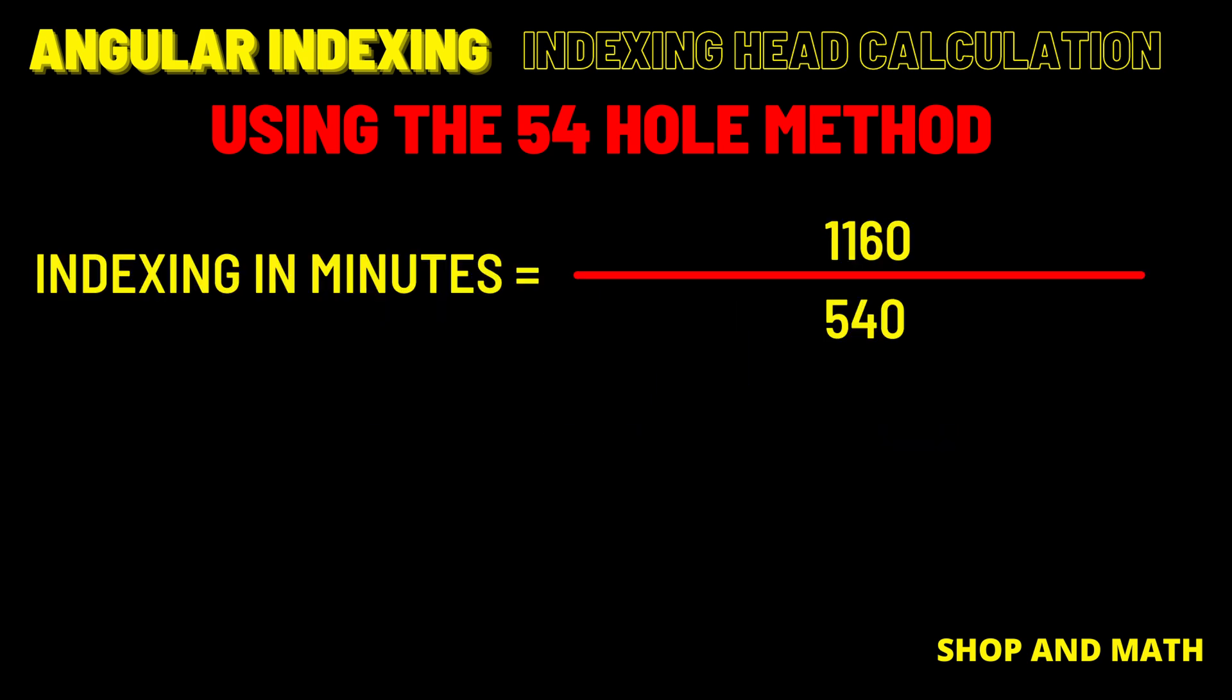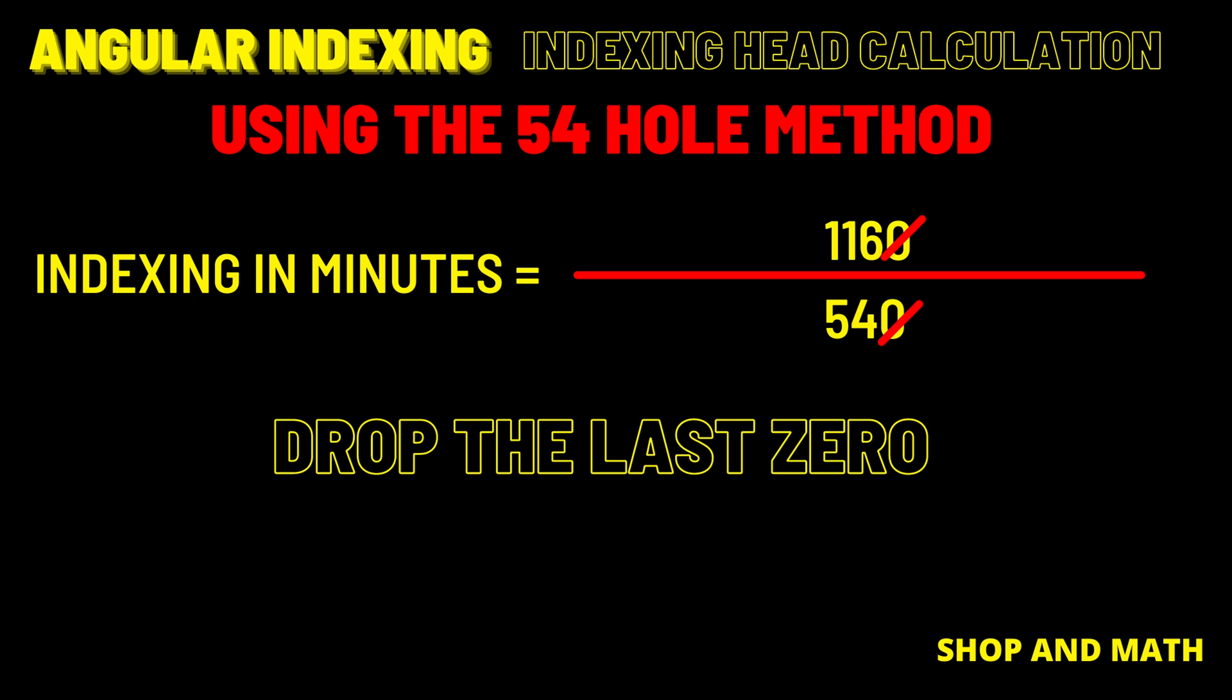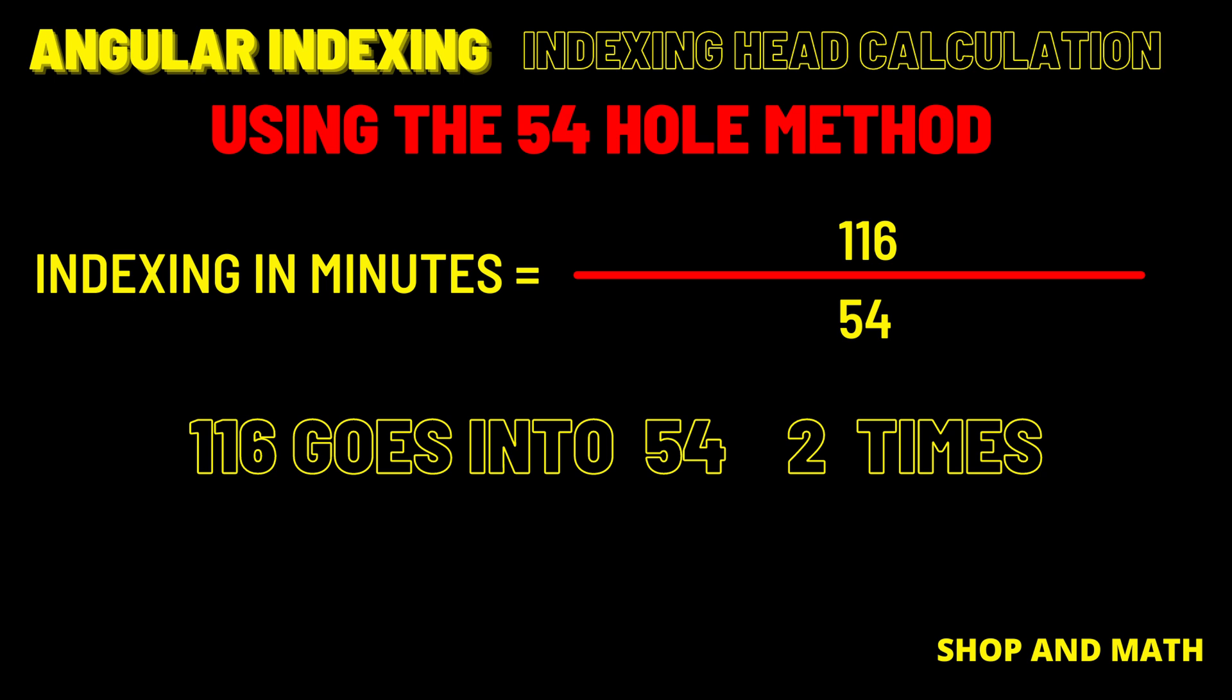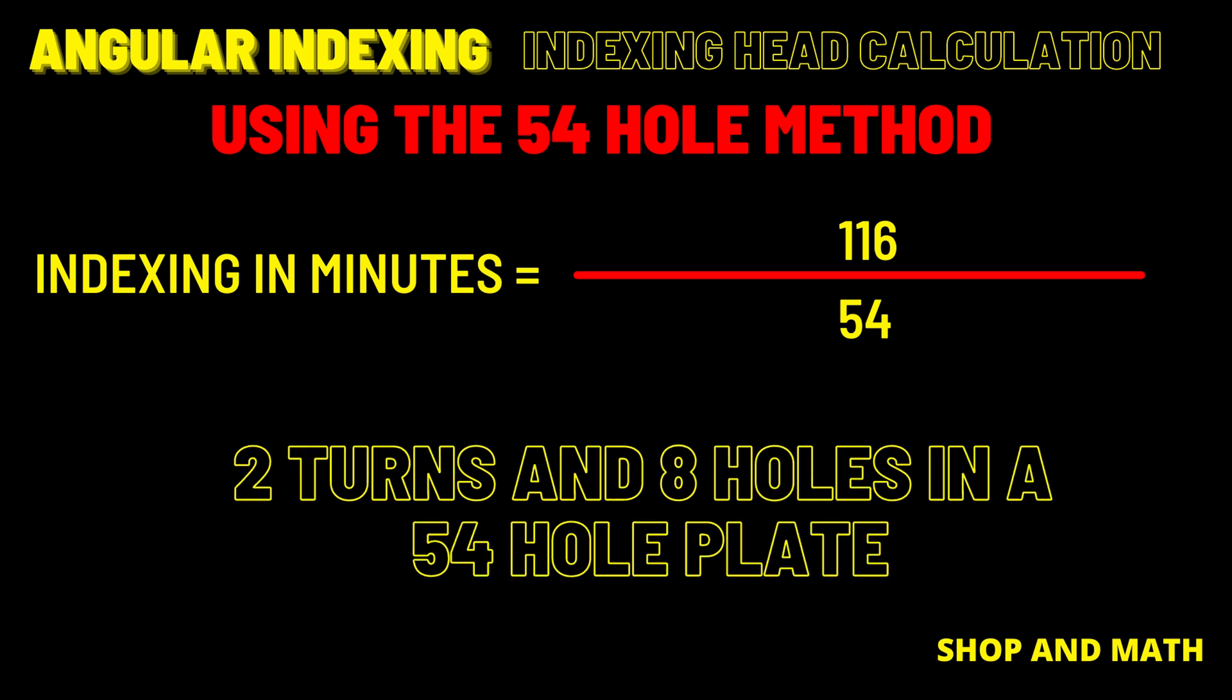1160 over 540. We drop the zeroes and now it's 116 over 54. 116 goes into 54 two times. 54 holes equals 1 turn. 2 times 54 is 108. 116 minus 108 equals 8. Therefore to cut 19 degrees 20 minutes it requires 2 turns, 8 holes, and a 54 hole plate. Let's demonstrate this using the indexing head simulator.